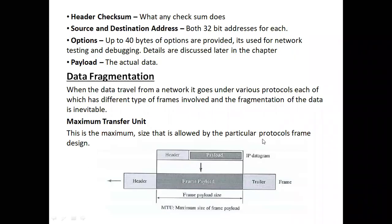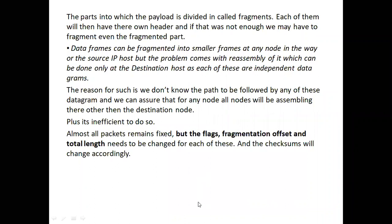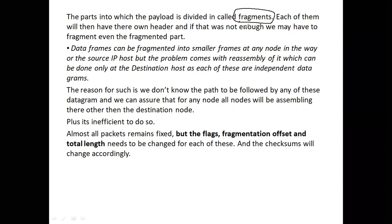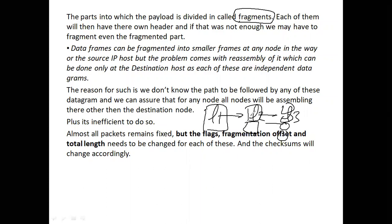The entire discussion today is about how to divide data, what the basis of division should be, and how to reassemble everything. Each of the pieces — whether it's from the first division or subsequent ones — is called a fragment. For example, one packet divided into two gives two fragments; divided into four gives four fragments. 'Fragment' is a generic term used for every single piece. I'll use 'level one fragment,' 'level two fragment,' etc., just for clarity in our communication.